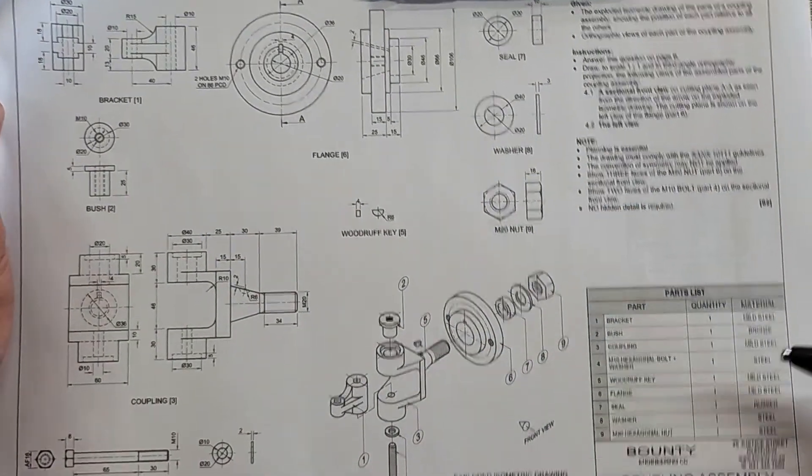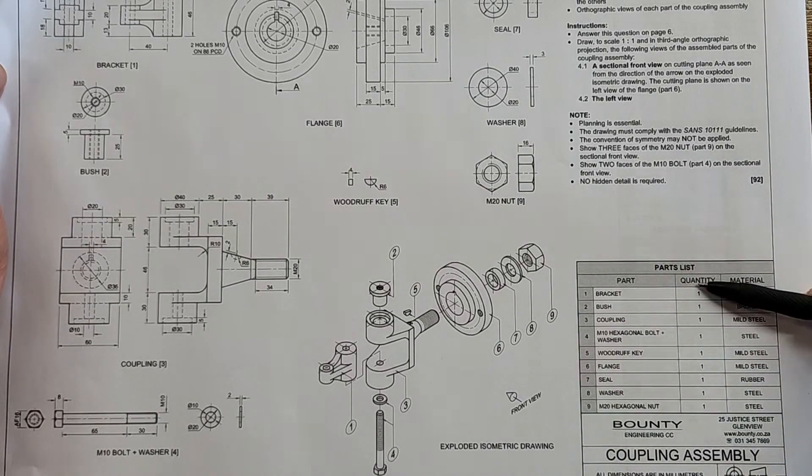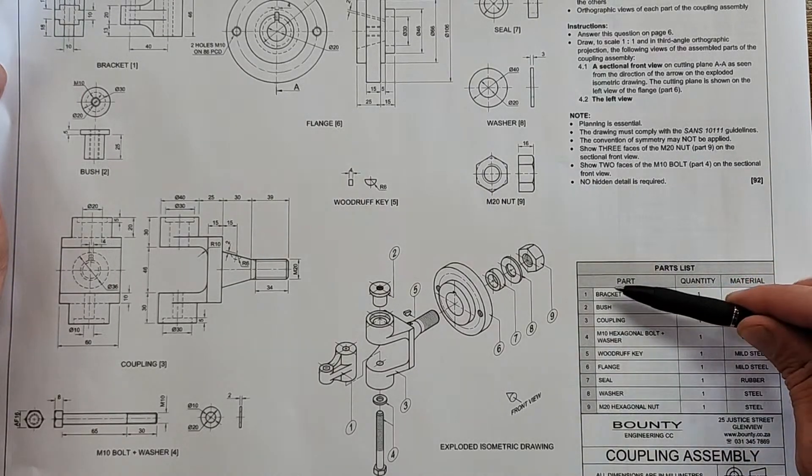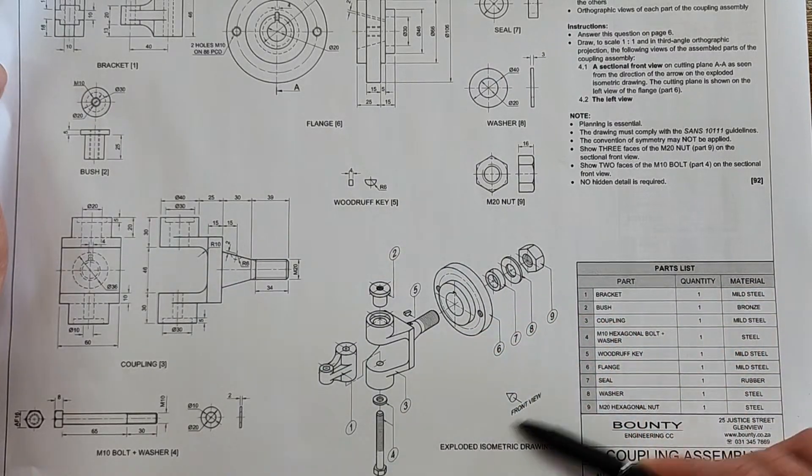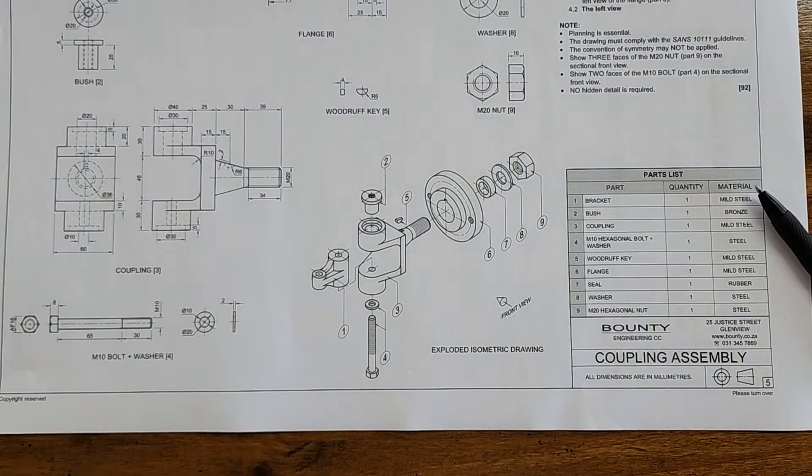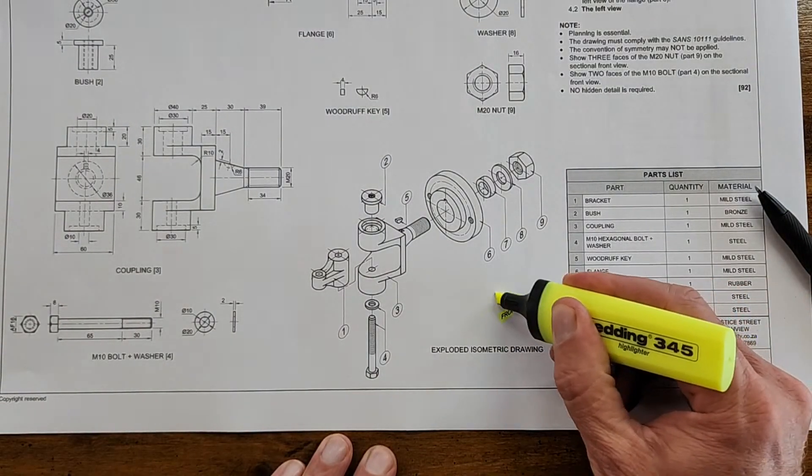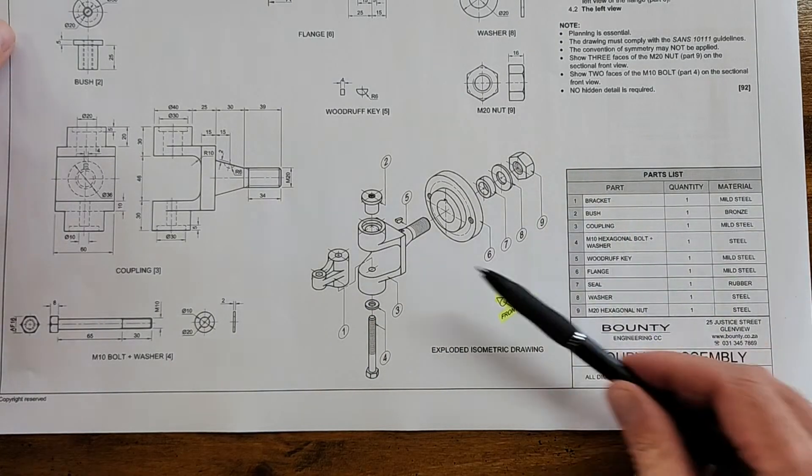Then the last question that you're definitely getting is of course your mechanical assembly. And there's a couple of things here that you can expect. You can expect to have a process and take time to understand the different materials, the quantities, and the names of the different components. This exploded isometric view will also be there and this is such a helpful view because they tell you the front view.